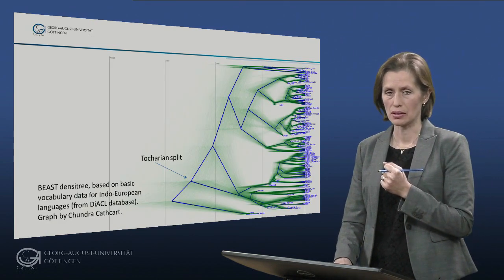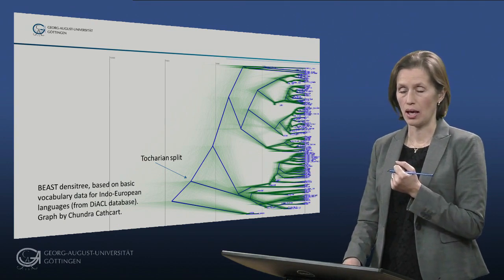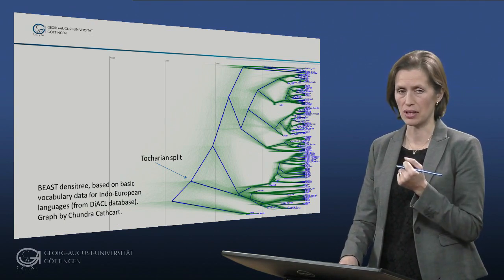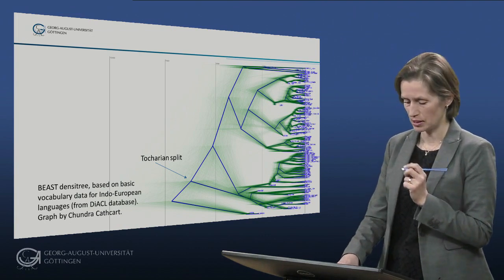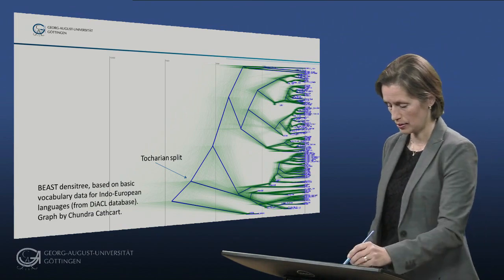Another argument comes from phylogenetics or lexical statistics, where Tocharian consistently branches off second after Anatolian. We can see on this tree that Tocharian branches off here, with Proto-Indo-European at the root and Anatolian as the first branch.